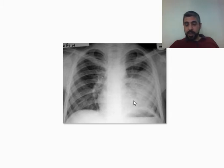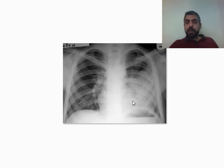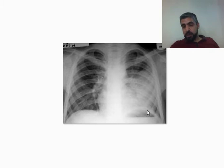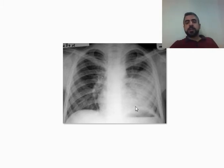Sometimes only the lingula of the left upper lobe consolidates, and this results in loss of sharpness of the left heart border. So if the left heart border is not very sharp and not very well seen, think about lingular consolidation.